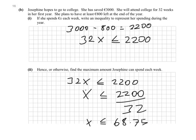So we end up with an answer that x is less than or equal to 68.75. That really means that x can't be any more than this number here. And remember, x is the amount that Josephine spends each week. So this is the maximum amount that she can spend each week.